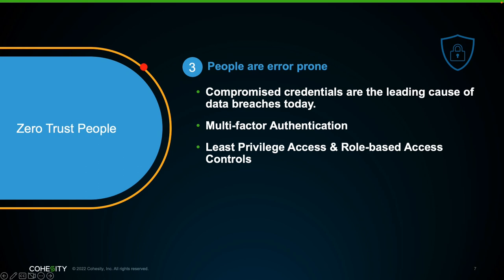Another principle of zero trust security is least privilege access, which means giving users only as much access as they need to perform their duties. No longer is it sufficient to give unfettered access to all areas of the network. Least privilege access reduces the cyber attack footprint should a user's credentials become compromised. This is accomplished through role-based access controls, where user identities can be tied to permissions and policies to determine what level of access a user receives.